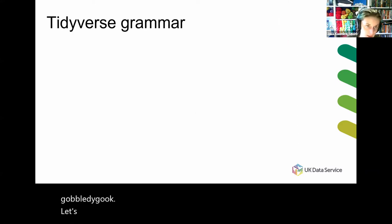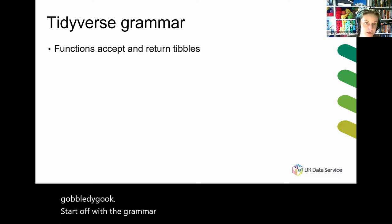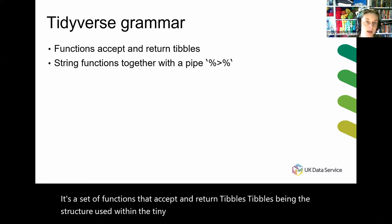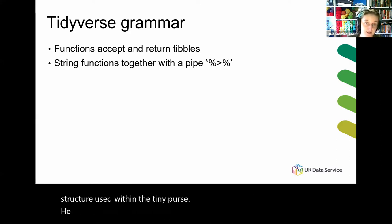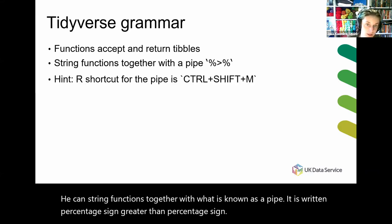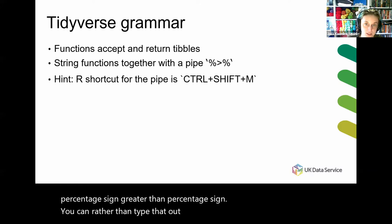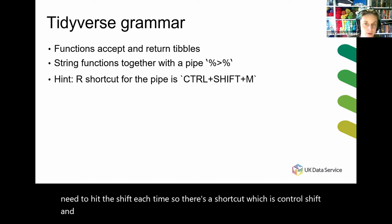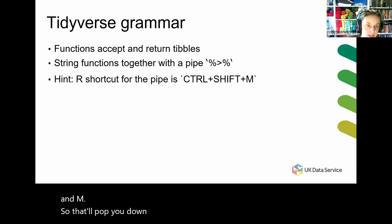Let's start off with the grammar. What is a Tidyverse grammar? It's a set of functions that accept and return tibbles, tibbles being the structure used within the Tidyverse. You can string the functions together with what is known as a pipe, written as percentage sign, greater than, percentage sign. Rather than type that out, there's a shortcut, which is Control, Shift, and M — that'll pop you a pipe right away, making it a little bit easier.